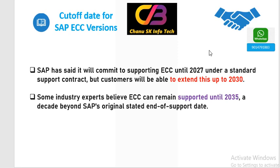Some industry experts are saying that ECC version is now available until 2032. When companies are now migrating, they say that S4 HANA is now available in 2027. So in 2027, ECC version is available and customers can migrate to the ECC version of S4 HANA. They can also migrate to S4 HANA.